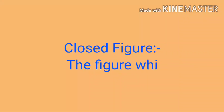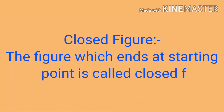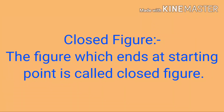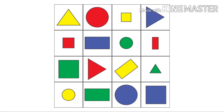So, closed figure: the figure which ends at the starting point is called a closed figure. We can easily understand closed figures by the following examples. Look at the examples very carefully — these are all examples of closed figures because the starting point and end points of all given figures are the same.